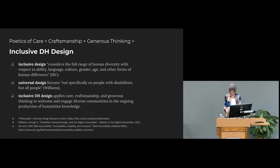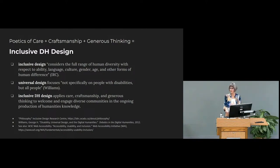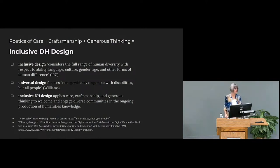Inclusive DH design builds on the larger concept of inclusive design, which considers the full range of human diversity with respect to ability, language, culture, gender, age, and other forms of human difference. In 2012, George Williams asserted that the digital humanities community should adopt a universal design approach — design focused not specifically on people with disabilities, but all people. Though I agree in principle, I prefer the term 'inclusive design,' which seems less likely to result in design for some presumed norm. Inclusive design calls for practical attention to who is included in the making and use of our designs, particularly those who can't use, have difficulty with, or have been excluded from existing designs.